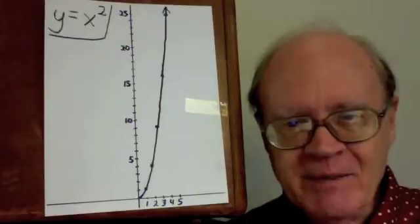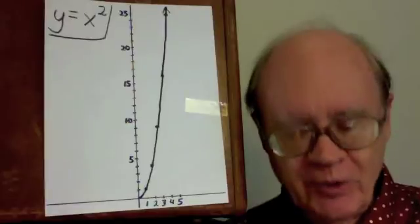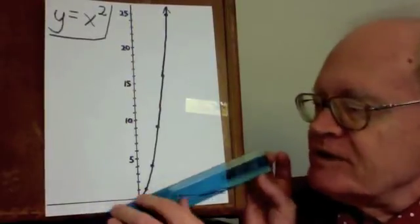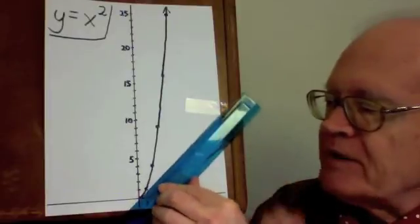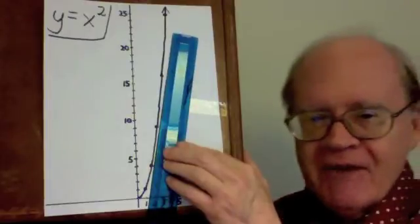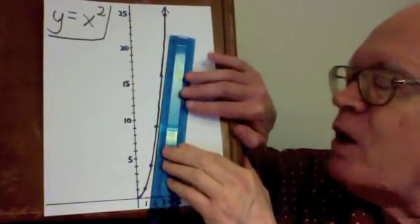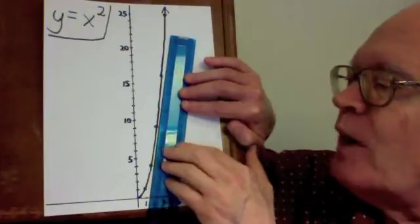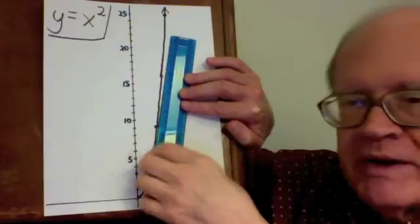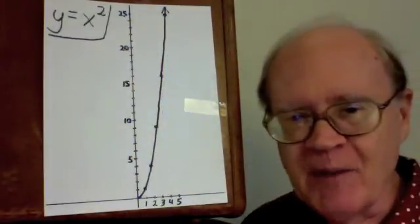How steep is this graph? Well, it depends on where you are. Near the bottom of the graph it's not so steep, but the further you go up the graph, the steeper it gets. The steepness of the graph at any particular point is considered to be the steepness of what's called the tangent line at that point — a line that just barely grazes the graph at that point. And I want to give you a few examples of steepness numbers.